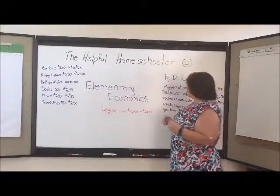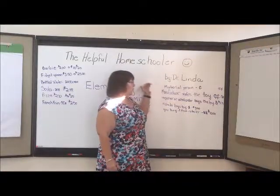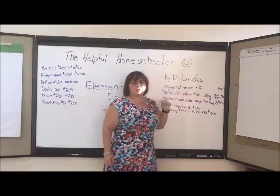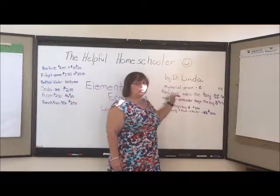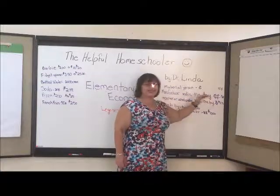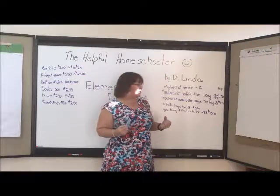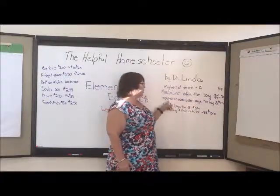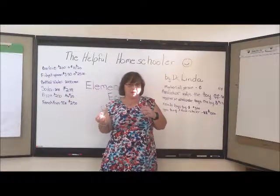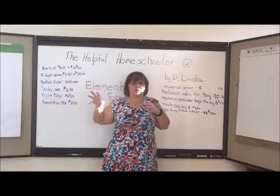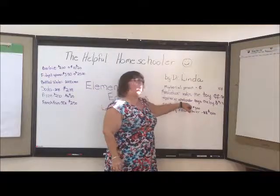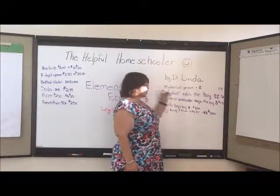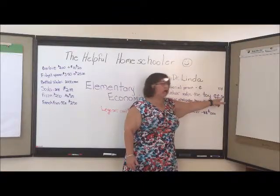Let's say a person has materials to make a doll, and the material supplier sells those materials for 10 cents. The manufacturer who buys those materials makes the toy for 75 cents — that includes all the labor and things that go into it. Then the manufacturer sells it to a wholesaler or importer for $1.75, so the manufacturer made $1.00 after costs.